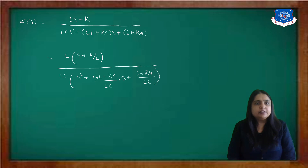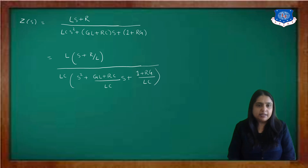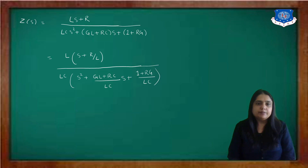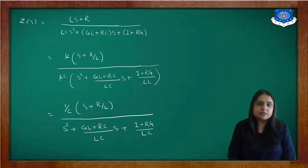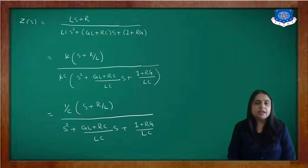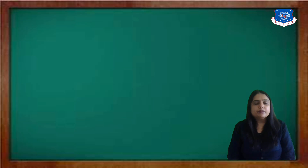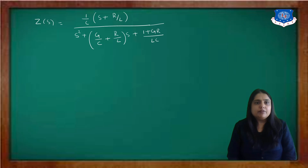Taking common factor L from numerator and LC from denominator: Z(s) = (1/C) · [s + R/L] / [s² + (G/C + R/L)s + (1+RG)/LC]. This is the expression for Z(s) derived from the circuit diagram.